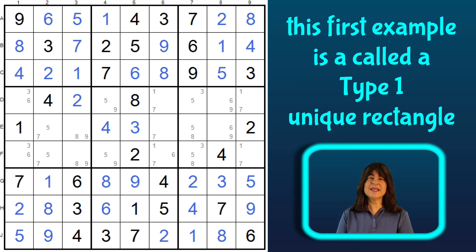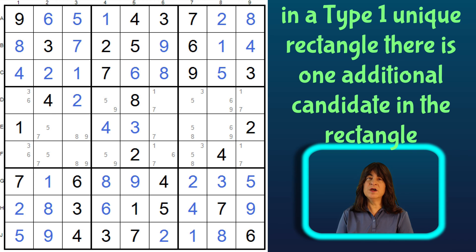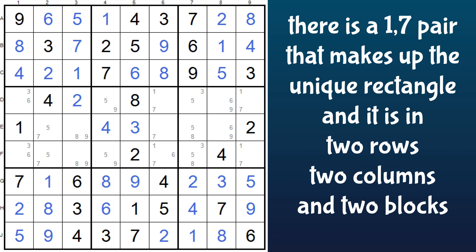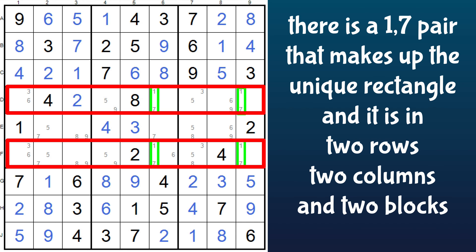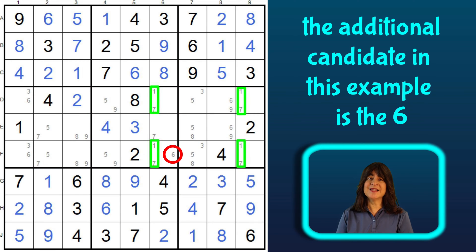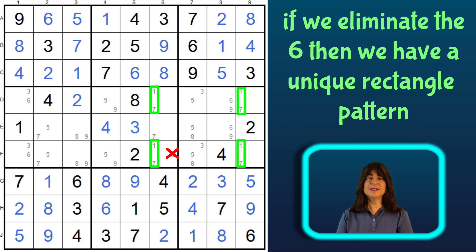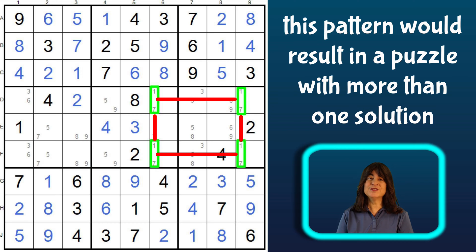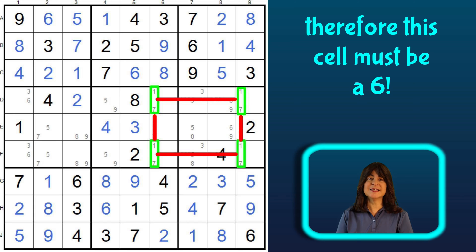Let's start with what is called a type 1 unique rectangle. A type 1 unique rectangle is when one of the four cells has one additional candidate. Here you can see there is a 1-7 pair in two rows, two columns, and two blocks. The additional candidate in this cell is the 6. If we were to eliminate the 6, then we would have a unique rectangle pattern and therefore a puzzle with more than one solution. Since we are assuming this puzzle has only one solution, we can't eliminate the 6, and therefore this cell must be a 6.